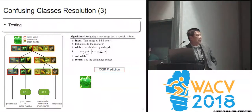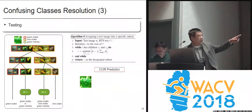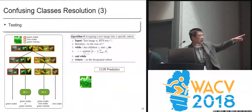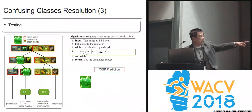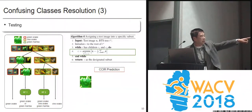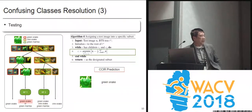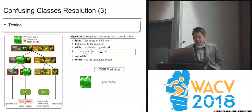During testing, we just go into that node and then trace the tree. For example, here there's a green snake — we go to the node with a hybrid of multiple classes, then use a random forest, and then we know this is a green snake.